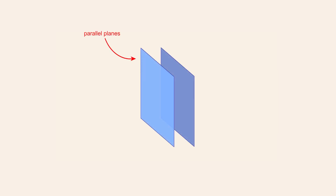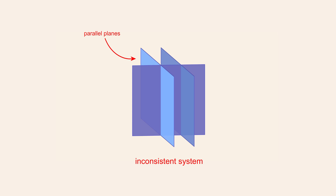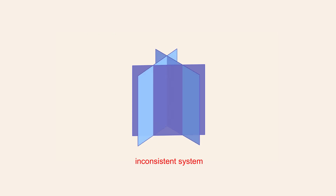Any system whose graph contains two distinct parallel planes will be inconsistent, since distinct parallel planes have no points in common and therefore the equations which those planes represent can have no common solutions. Regardless of the orientation of the other planes in the system, no point can exist which simultaneously lies on all planes. Another configuration which produces an inconsistent system is a system containing three planes which are not parallel but whose intersections lie along three parallel lines. Since no point can simultaneously lie on all three planes, the system has no solutions and is therefore inconsistent.